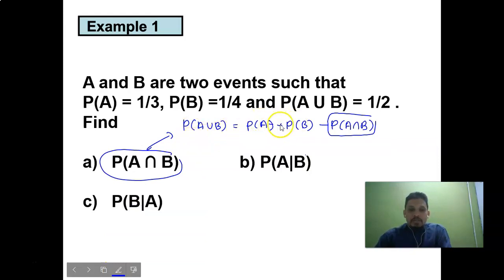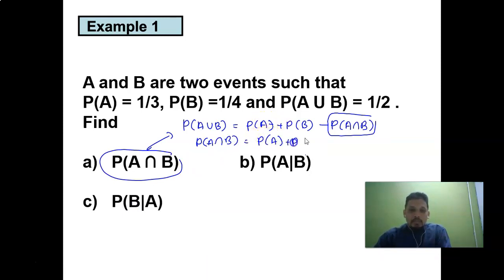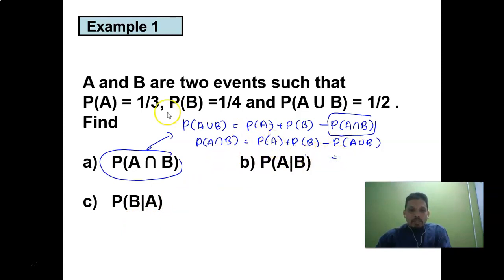Rearranging: probability of A intersect B equals probability of A plus probability of B minus probability of A union B. Substituting the values: probability of A is one over three, probability of B is one over four, and probability of A union B is one over two.